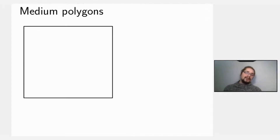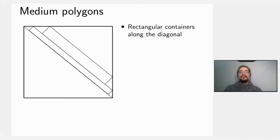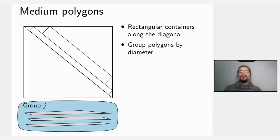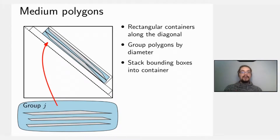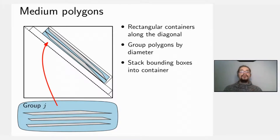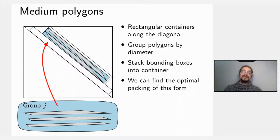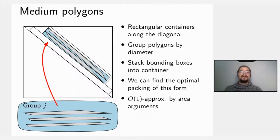Medium polygons are trickier. We rotate them by 45 degrees, define rectangular containers along the diagonal, and group polygons by diameter so that polygons with similar diameter are grouped together. We stack the bounding boxes of these polygons into the corresponding rectangular containers. The key insights are that we can find the optimal packing of this form and show it is a constant approximation via area arguments, yielding a constant approximation for medium polygons.